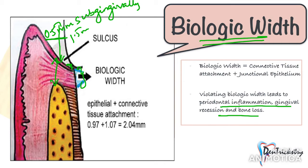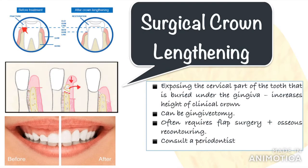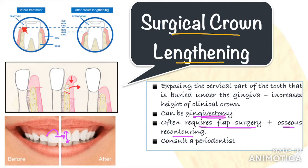The next option is the crown lengthening procedure. Crown lengthening is basically exposing the cervical part of the tooth that is buried under the gingiva, increasing the length of the tooth. This can be done by a simple gingivectomy using a scalpel, laser, or cautery if there is sufficient sulcular depth. However, if the sulcus is shallow, which is the scenario in most cases, you have to reflect the flap followed by osseous recontouring.